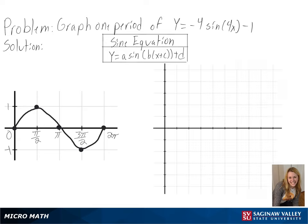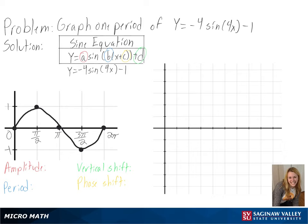To plot our graph, we need to solve for the amplitude, period, vertical shift, and phase shift. We can see that we don't have a phase shift, but we do have a vertical shift of negative 1, which will make our whole graph go down one unit, so our center will be at negative 1.